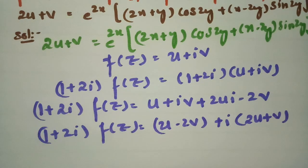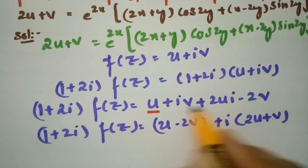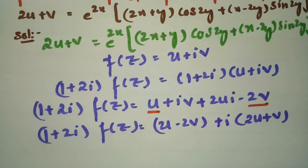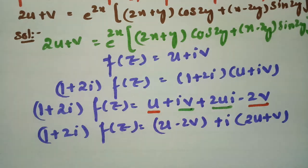So I am taking the real part as (u - 2v) and the imaginary part as (2u + v).